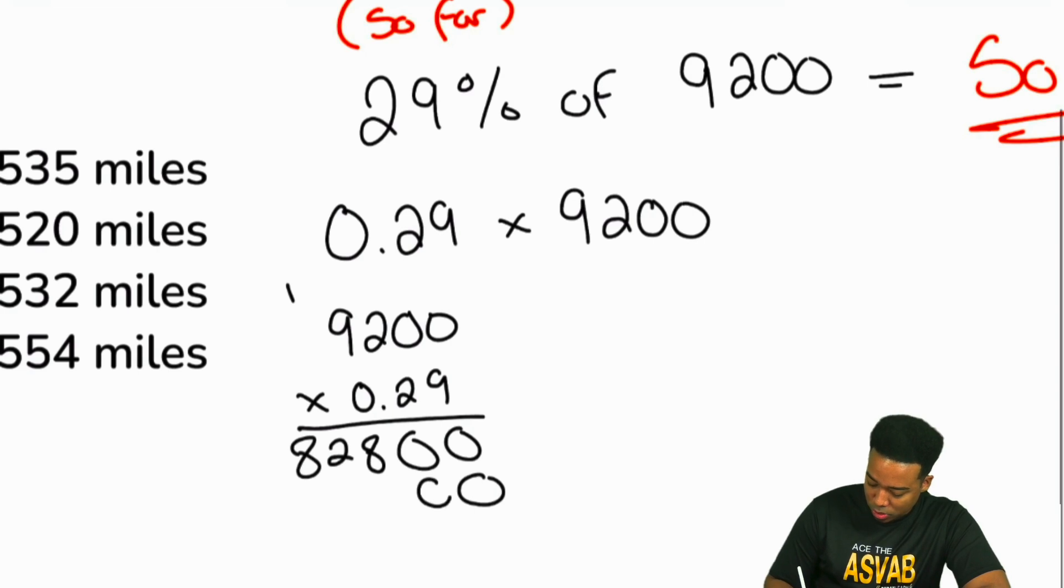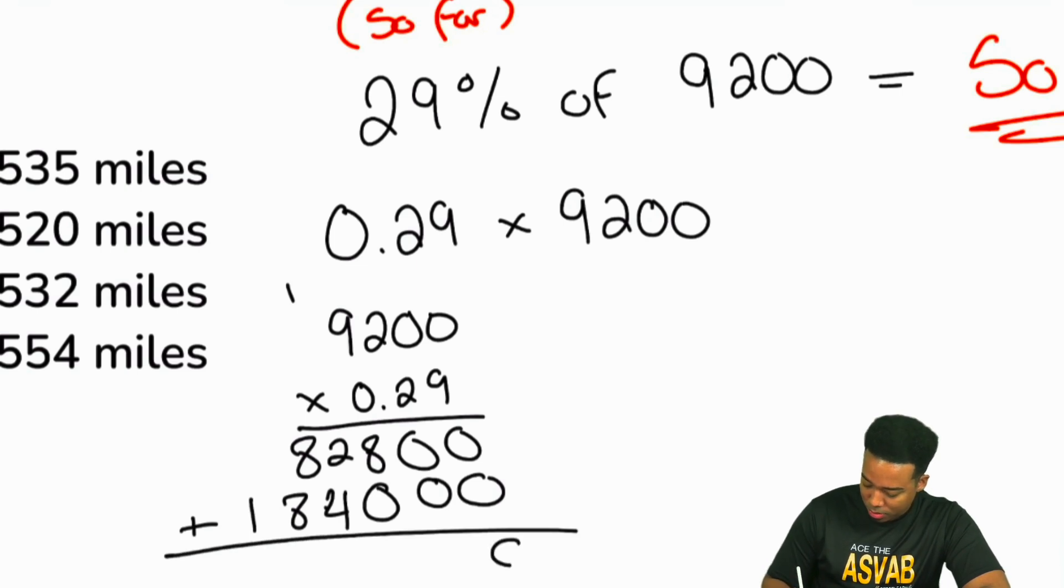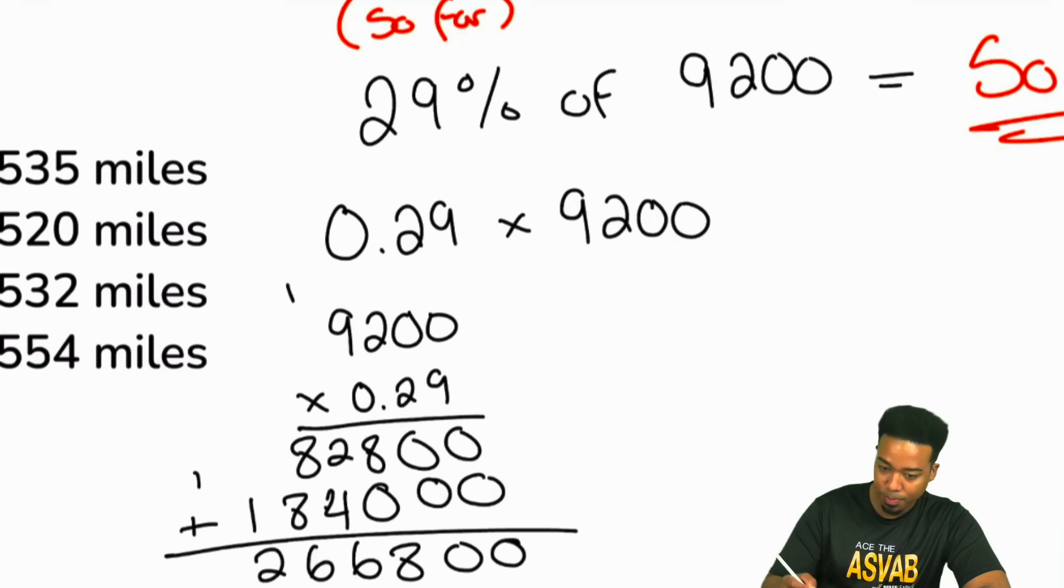Bring that 0 down, then 0 times 2, 0 times 2, 2 times 2, and then 2 times 9. Add that all up, 0, 0, 8, 6, 16, and 2.